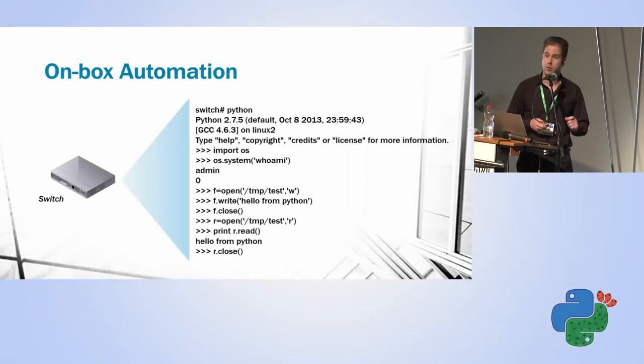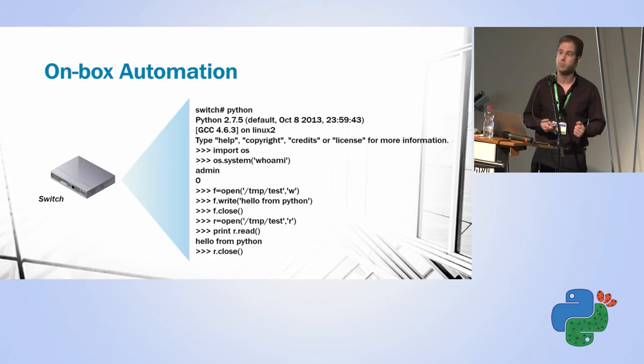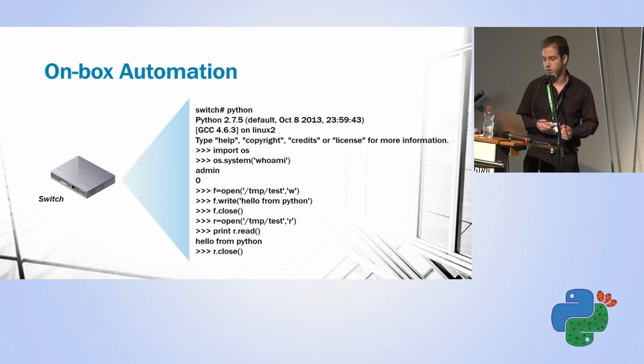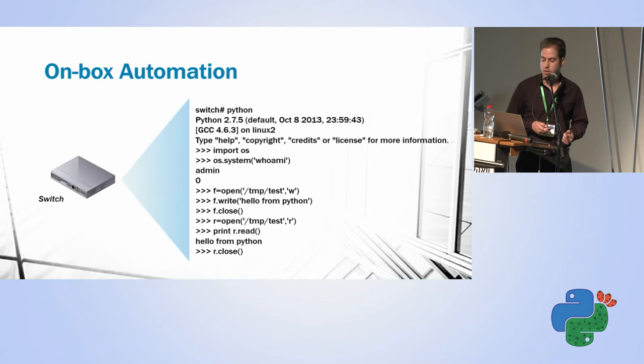When you talk about automation, there are two types: on-box automation and off-box automation. In on-box automation, you're running the script on the device itself.